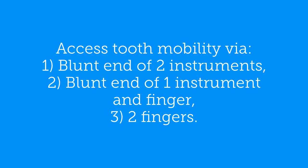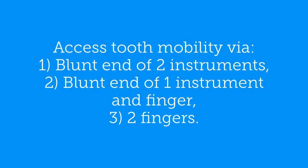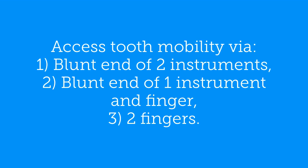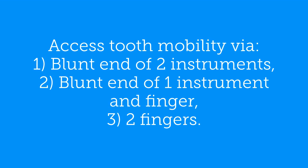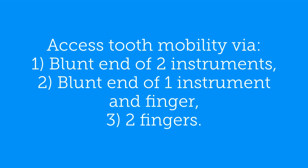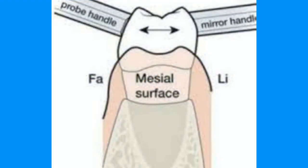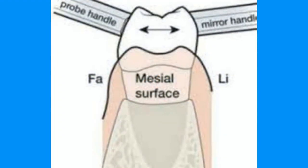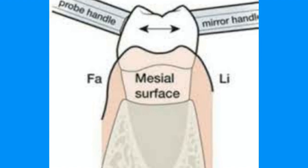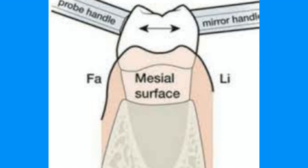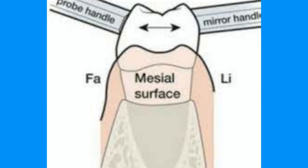You can assess tooth mobility via the blunt end of two instruments, like a probe and a mouth mirror, or two mirrors. Second, the blunt end of one instrument and your finger. Third, you can use your two fingers. Here is a picture showing that you can use the mouth mirror's blunt end together with the probe handle, and you can move the tooth.